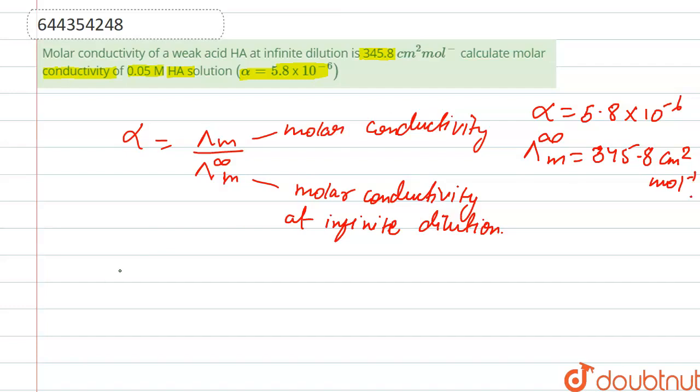At infinite dilution, the weak acid is completely dissociated. So lambda M is equal to alpha times lambda M infinity.